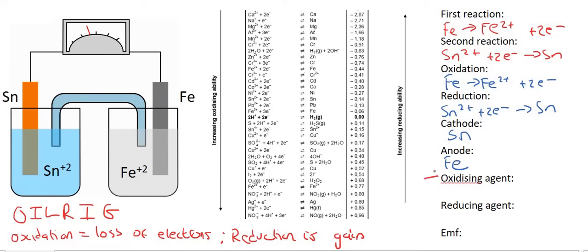The oxidizing agent is the element, or the substance, that is reduced. We said that Sn2+ is being reduced, and so that will be our oxidizing agent. The reducing agent is the substance that is oxidized, and so that will be Fe.